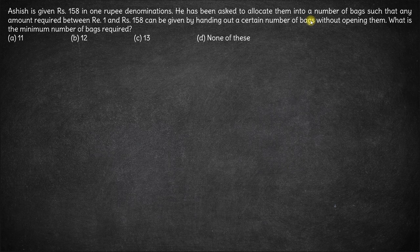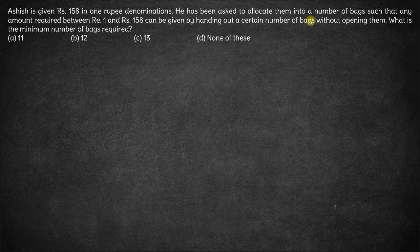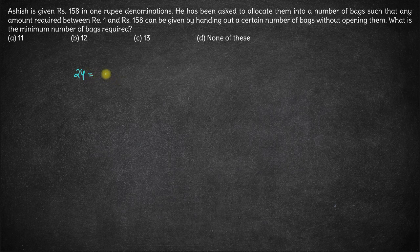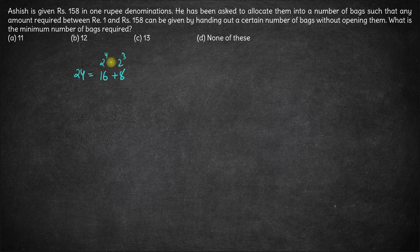This question is based on a simple observation that any number can be written as sum of powers of 2. Take any number, let's say 24. 24 can be written as sum of powers of 2. This can be written as 16 plus 8, which is 2 to the power 4 plus 2 cube.